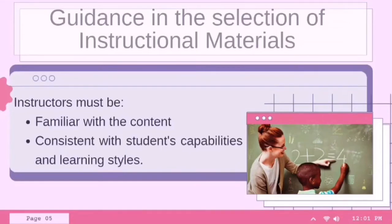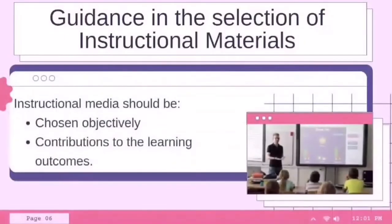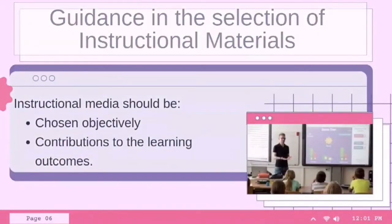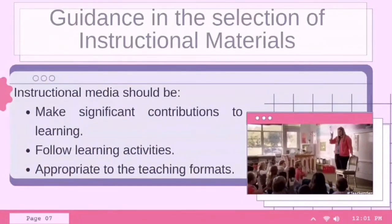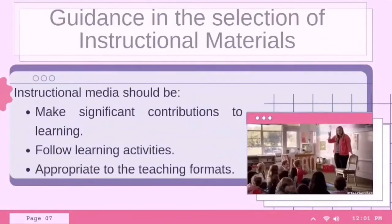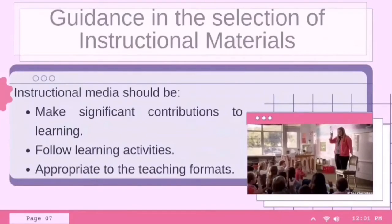Under the guidance for selection of instructional materials, instructors must first be thoroughly familiar with the content of all media used in instruction. Instructors must also select only instructional media that are consistent with student capabilities and learning styles. Instructional media should be chosen objectively rather than on the basis of the teacher's personal preference or bias. Second, chosen on the basis of their contributions to learning outcomes. Third, produced locally by the instructor, as this usually makes significant contributions to learning. Fourth, follow learning activities. And lastly, it must be appropriate to the teaching formats being used.